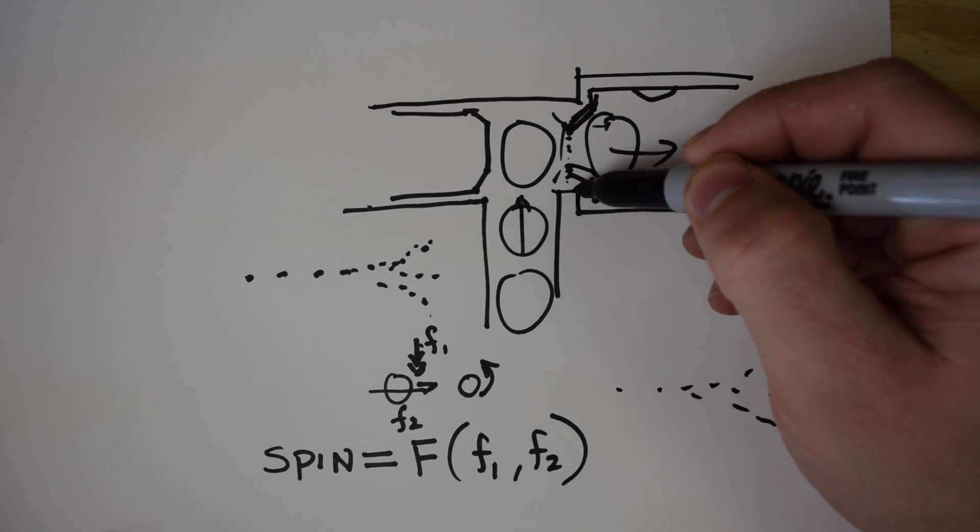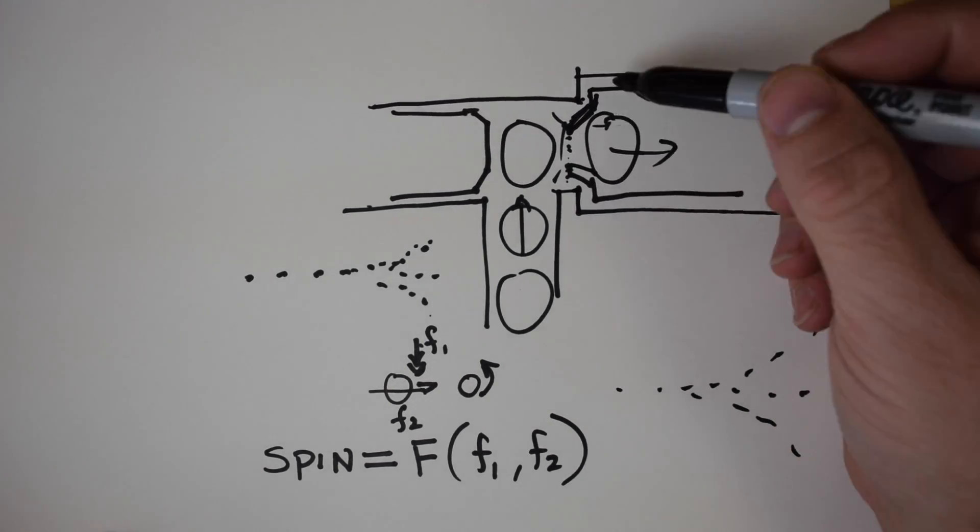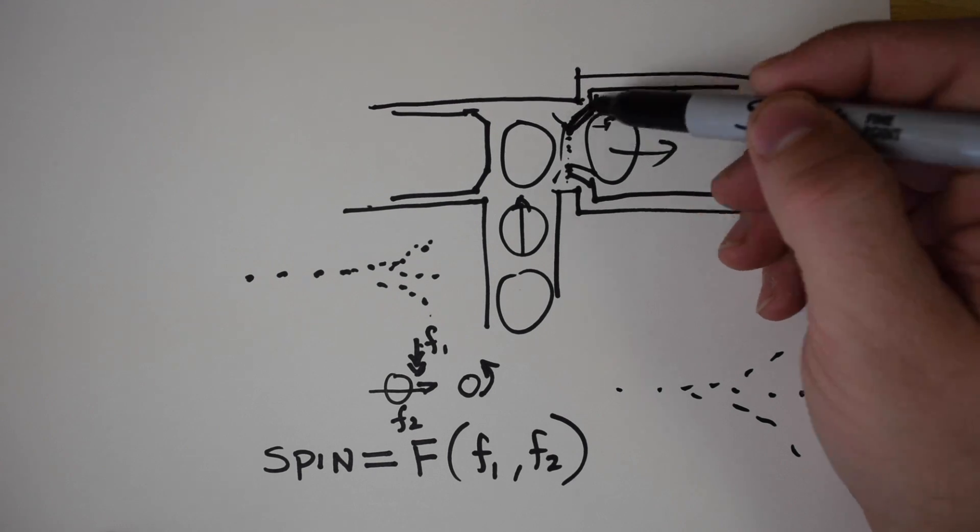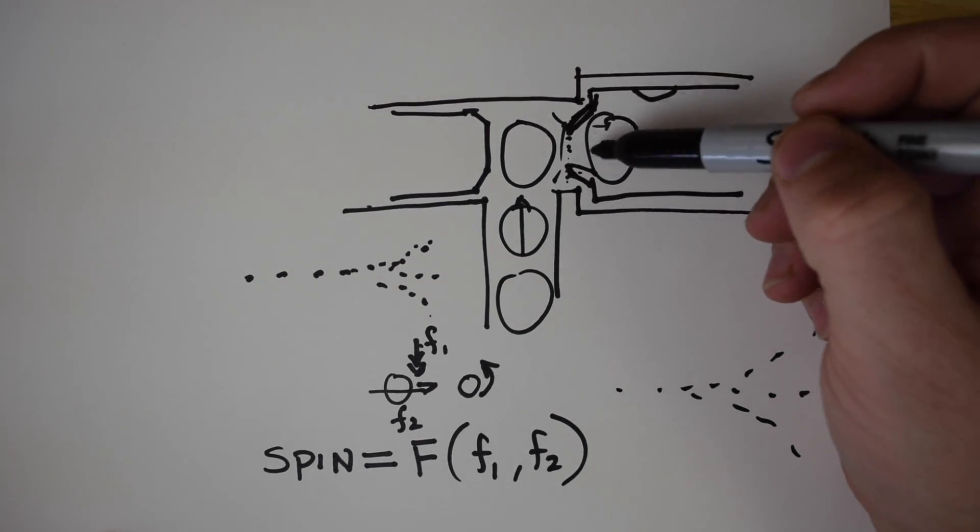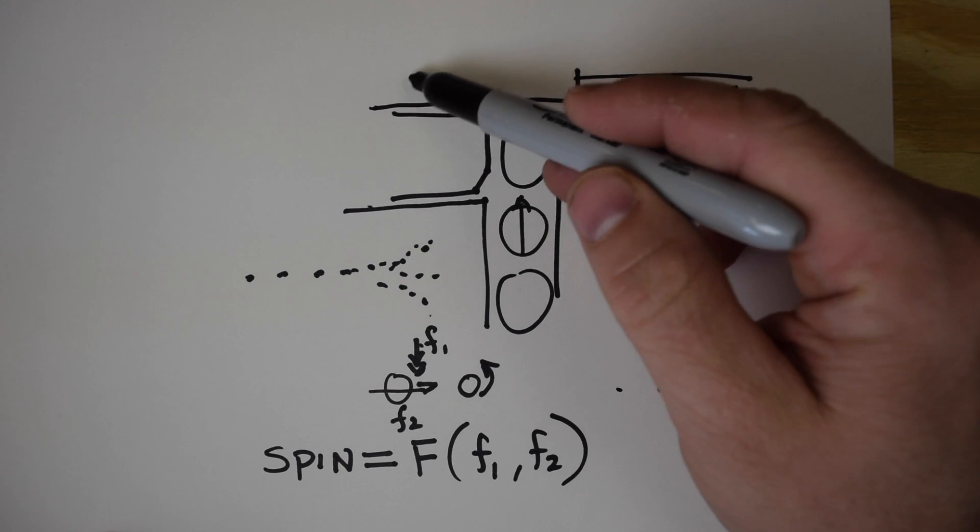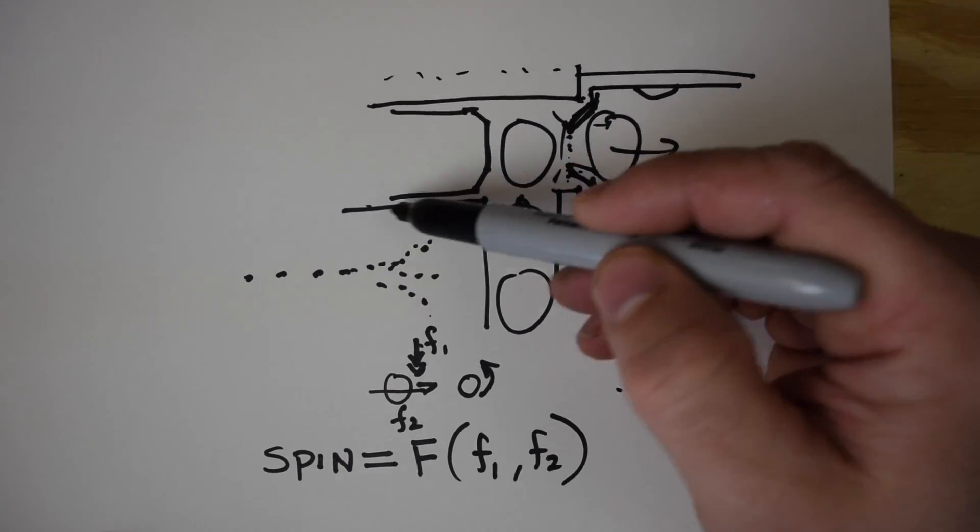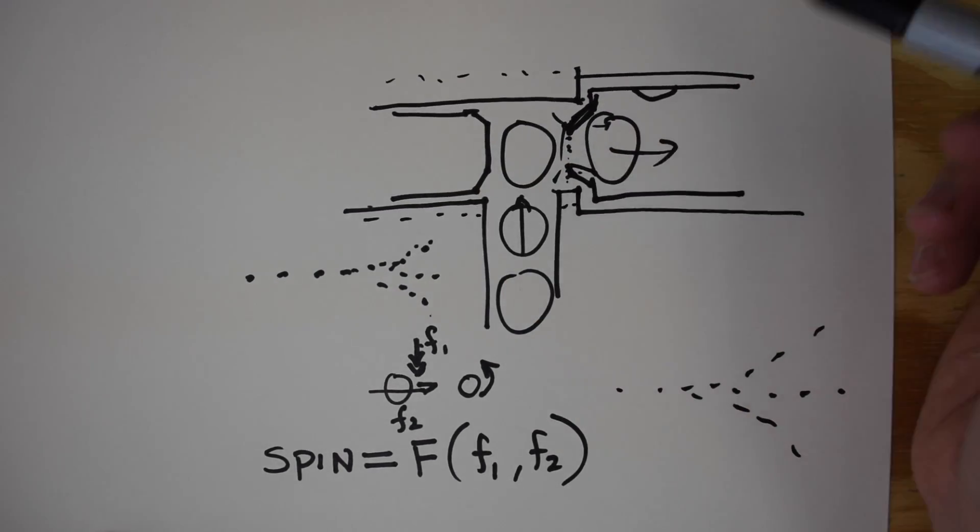Another is the geometry of the inside of the hop-up chamber. You notice there are these edges here. Those edges actually support the bucking lips. Some hop-ups, these are wide open, so they provide basically no support to the bucking lips at all. That's not good.